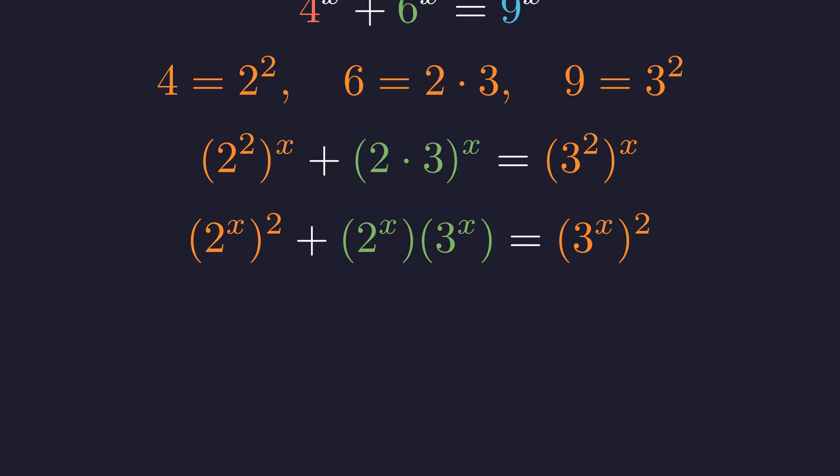Take a moment to appreciate what's happened here. By using the exponent rules, we've transformed our equation into a form with a very clear pattern. The left side has terms with 2 to the power of x, and the right side has 3 to the power of x squared. Can you see how the equation is now more structured?